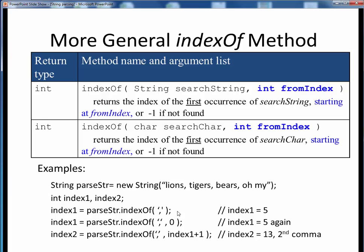In the first one, we are locating the index of the first comma found in this original string, starting by default at the beginning of the string. As we can see, we find that location at zero, one, two, three, four, five within the string.